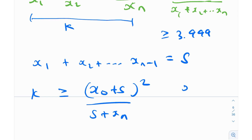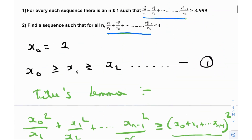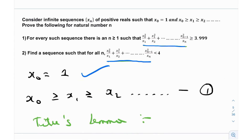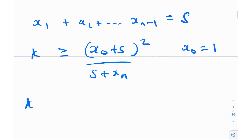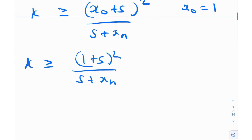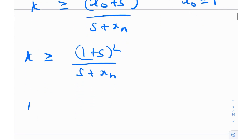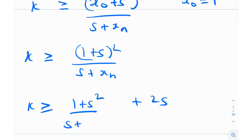They've actually given us the value of x0 — it is 1. So if we plug that in, we get k ≥ (1 + s)² / (s + xn). Which is great. We can expand this: it becomes (1 + s² + 2s) / (s + xn), dividing it out a little bit.